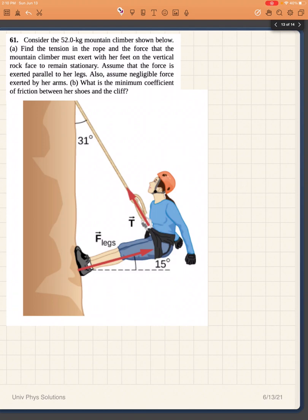Okay, let's look at problem 61 from University Physics by OpenStax. It's in chapter six. We have a climber and we are asked to find tension on the rope and the force that the climber must exert.